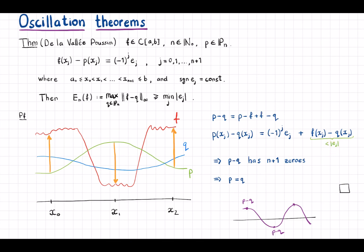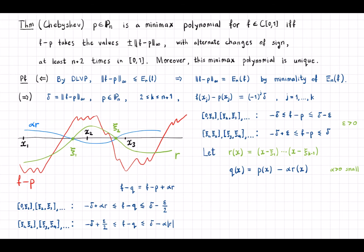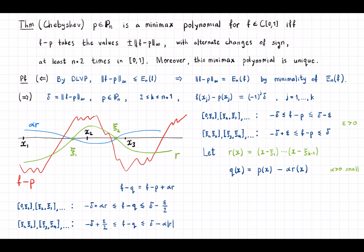Our next theorem is Chebyshev's oscillation theorem, which characterizes minimax polynomials. A polynomial p of degree n is the minimax polynomial for a given function f if and only if the difference f minus p takes the values ±‖f minus p‖ with alternating signs at least n plus two times in the interval. Moreover, this minimax polynomial is unique.